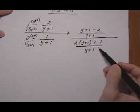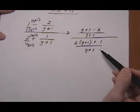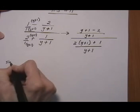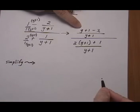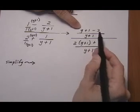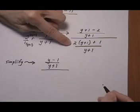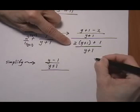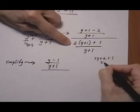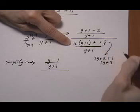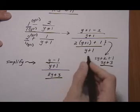Now we have one fraction on top and one on the bottom. Before we change this to multiply and flip, let's simplify to have less to work with and be less likely to make a mistake. Clear parentheses and combine like terms: on the top we combine like terms and get (y minus 1) over (y plus 1). On the bottom, 2 times (y plus 1) is 2y plus 2, plus 1, which combines to 2y plus 3. So the denominator becomes (2y plus 3) over (y plus 1).